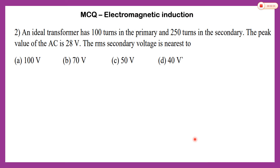Now the next is a problem. An ideal transformer has 100 turns in the primary and 250 turns in the secondary. The peak value of AC is 28 volts. You have to calculate the RMS voltage across the secondary. To solve this problem you must know the concept of transformer.